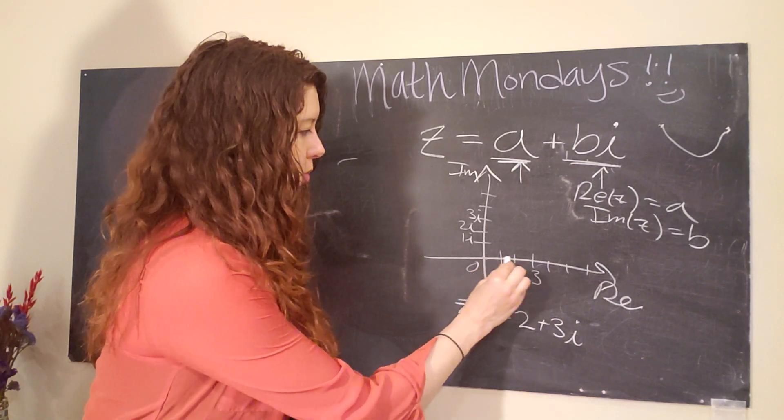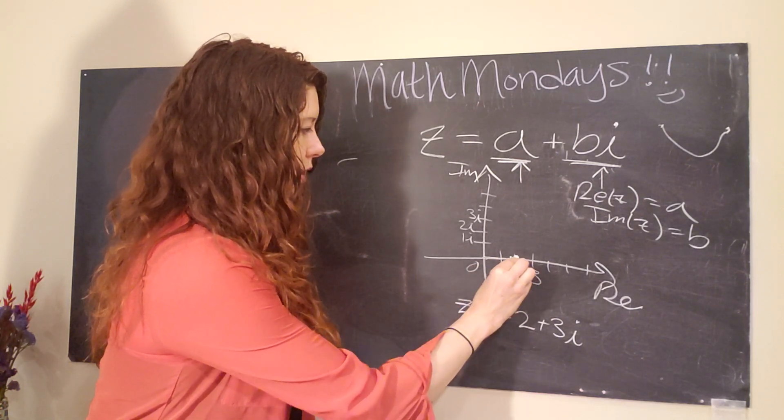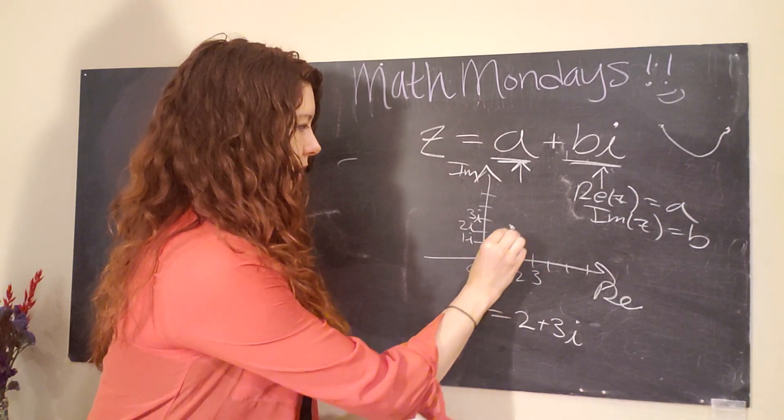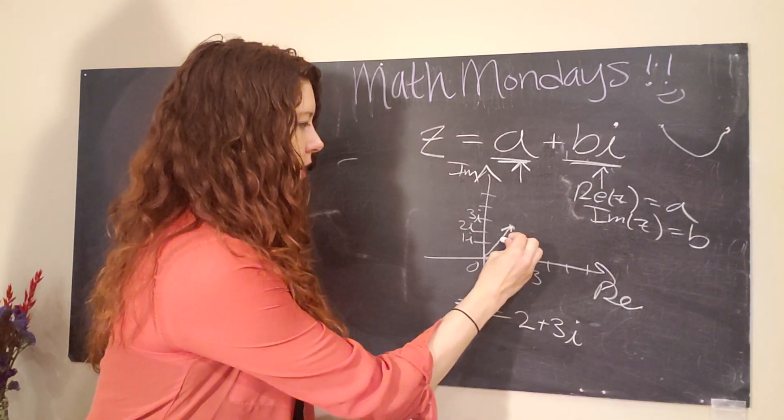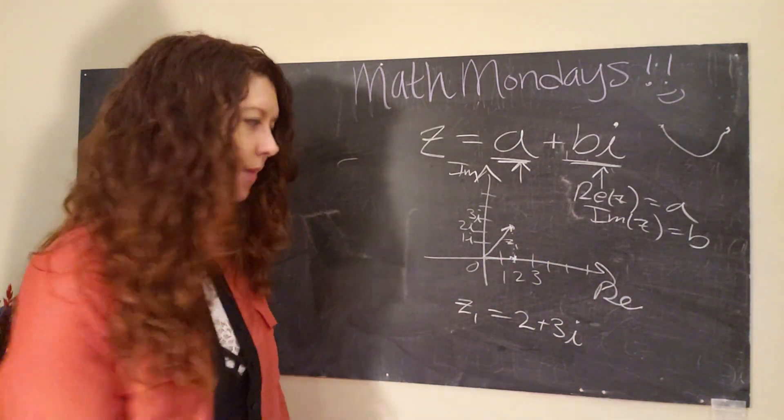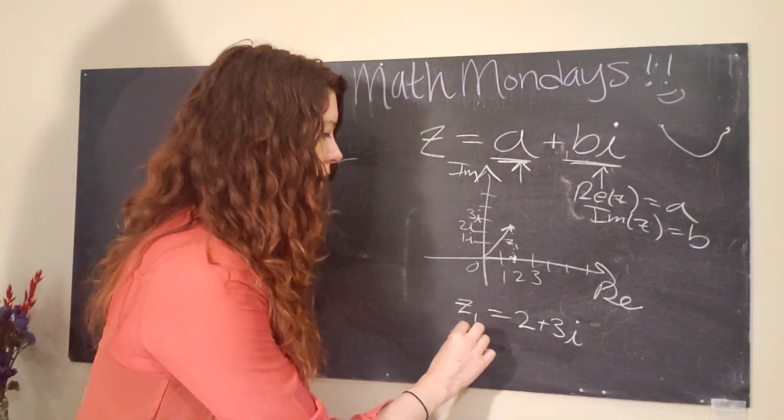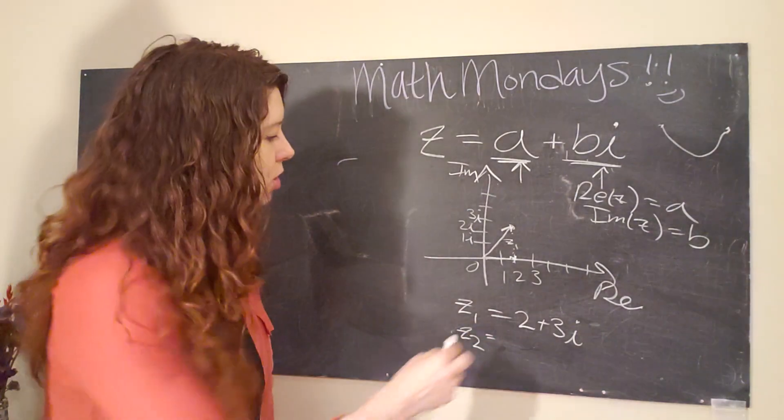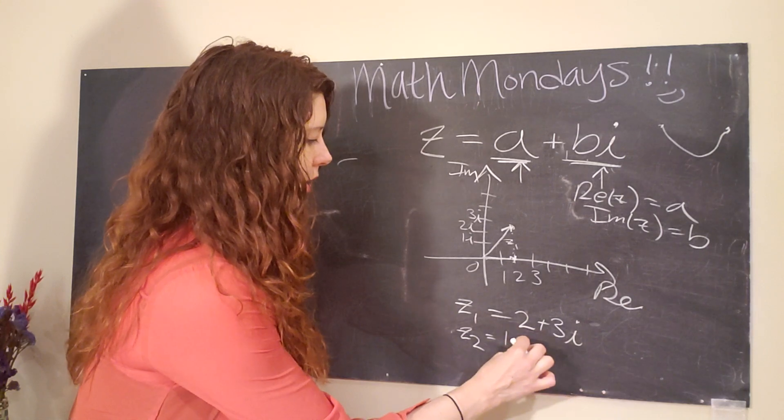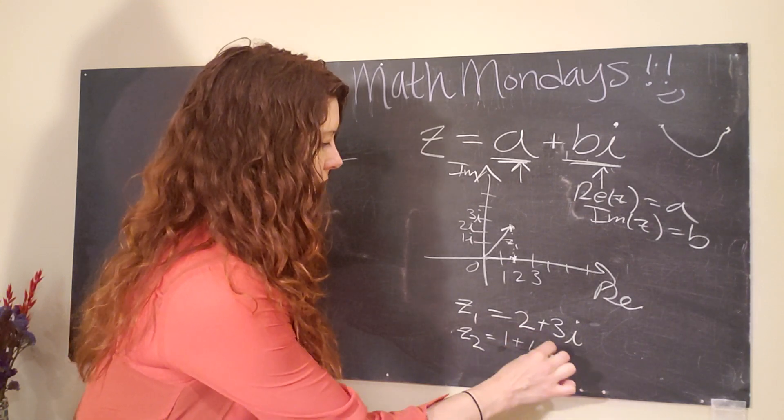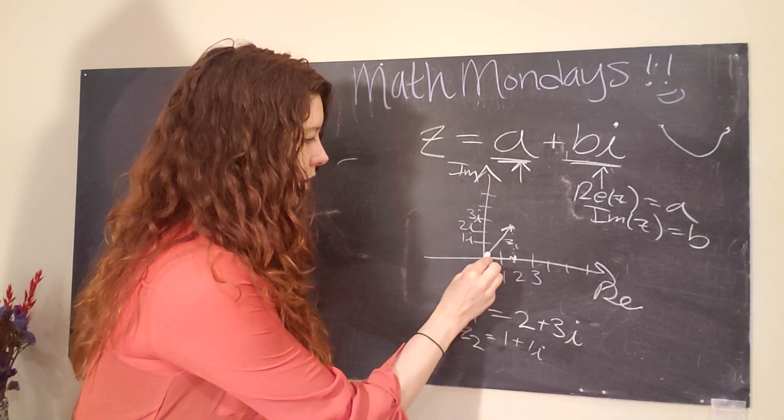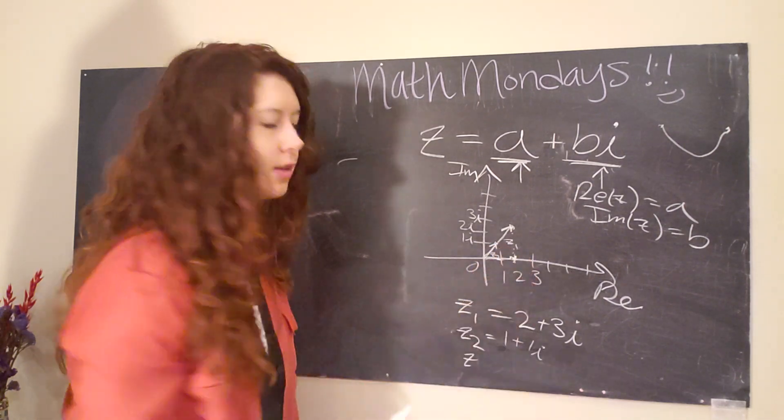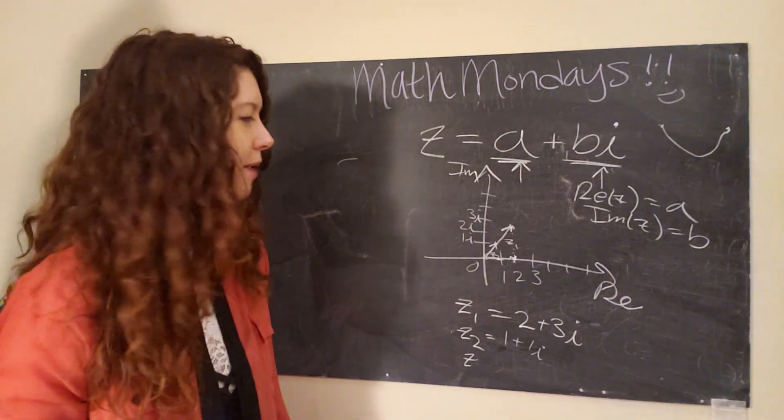So then we put zero at the origin and any number—let's say we have Z one equals two plus three I—we can plot any complex number on this complex plane. So the real part goes over to two, and then we go all the way up to three. And that is our Z one. Not so bad. And so in this way, we can understand how different complex numbers are related to each other. So if we have one plus one I, then we get a number that's just like that. That's Z two.